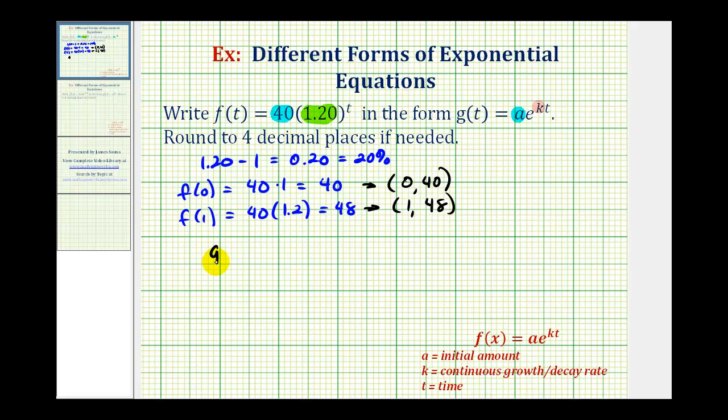So we have g(t) = 40e^(kt). But g(t) must also contain this point here. So g(1) must equal 48.